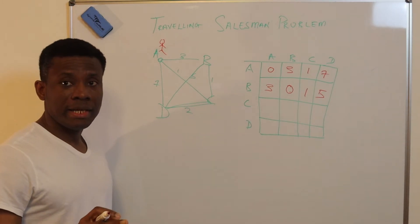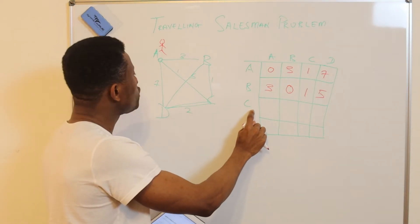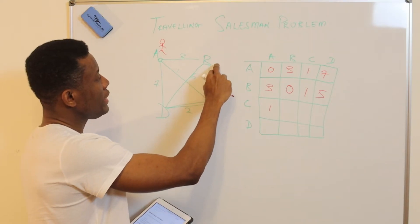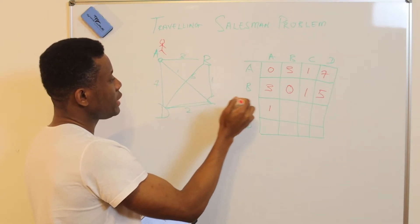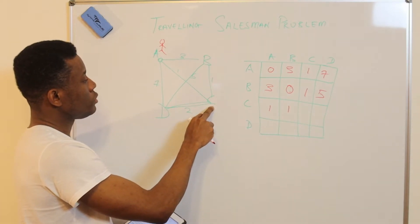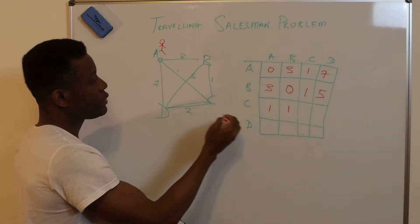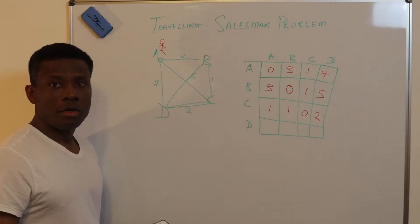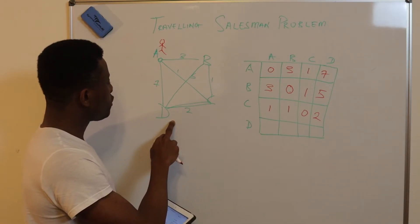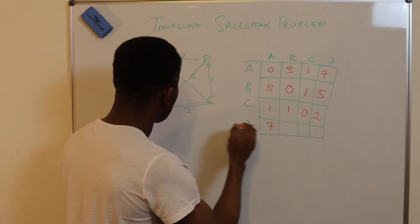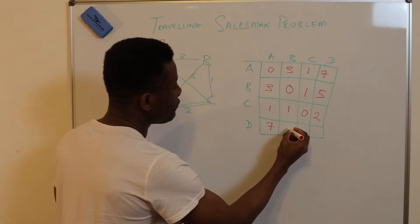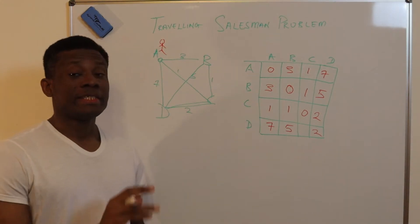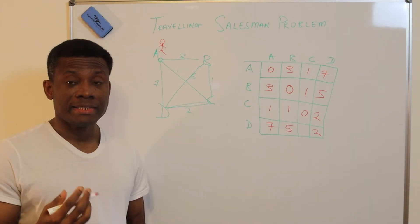From C to A is one. From C to B is one. C to C is zero. From C to D is two. Then from D to A is seven, D to B is five, and D to C is two. We've now represented this problem as a distance matrix.